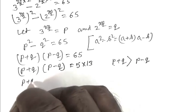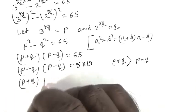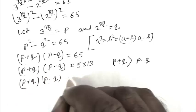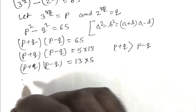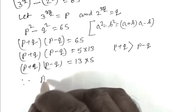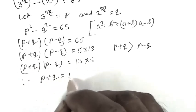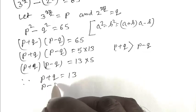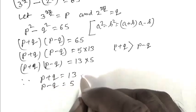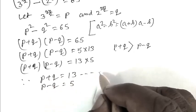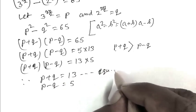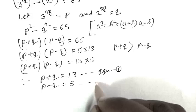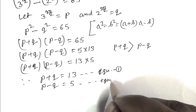So P plus Q times P minus Q equals 13 times 5. Or we can write that P plus Q equals 13, P minus Q equals 5. This is equation number 1, and this is equation number 2.